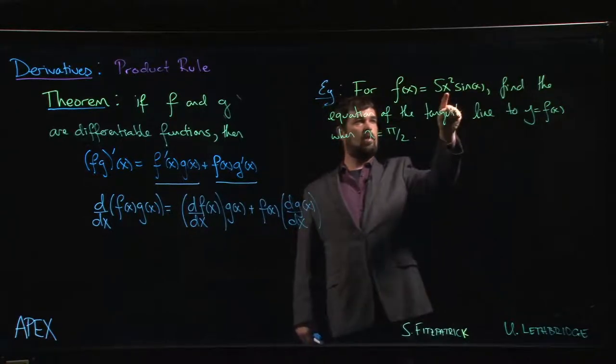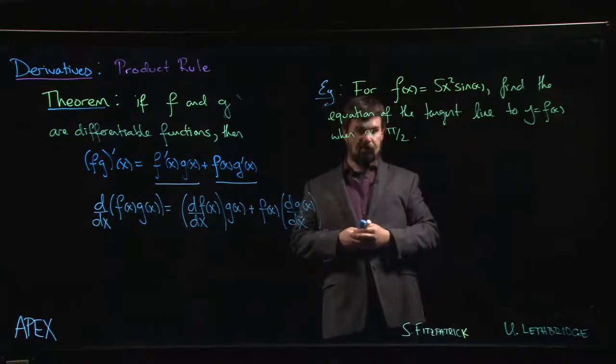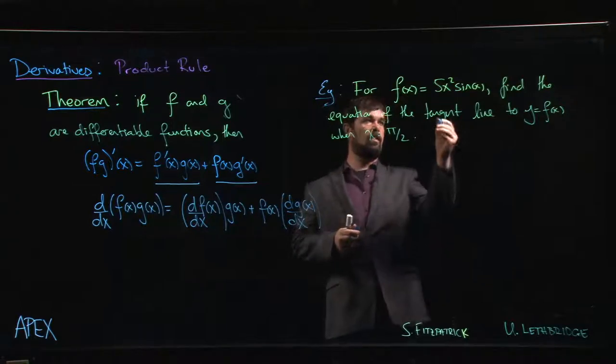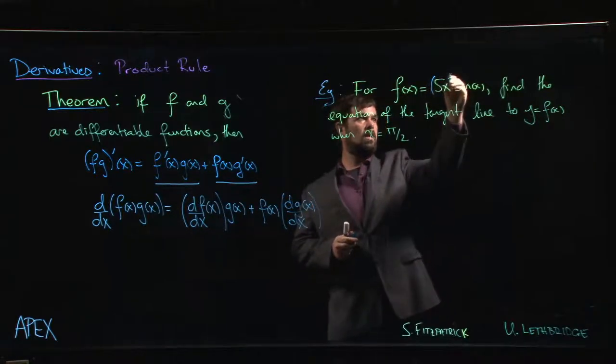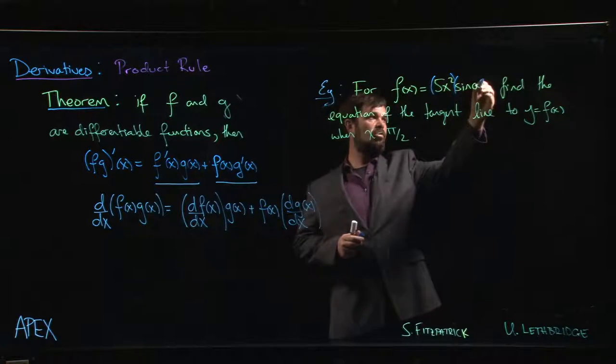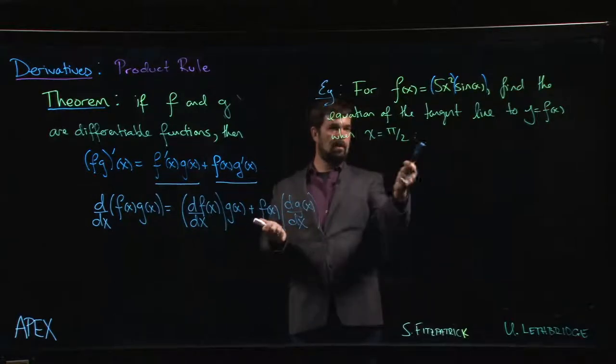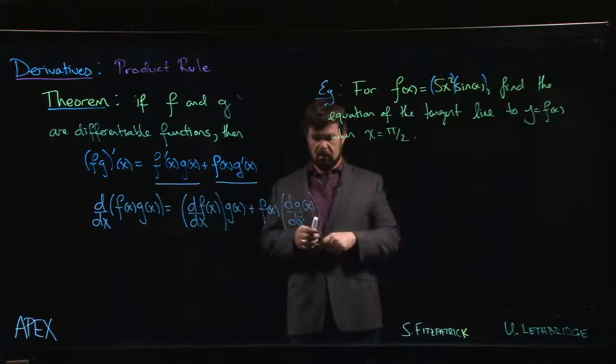What we do have to worry about is the product of the x squared times sine x. And so what we might do in this case, so that we don't have to worry too much about that constant multiple, is we'll choose to group things like so. We'll treat 5x as one term. We'll treat sine x as another term. Of course, if we want the tangent line, we need to compute the derivative.